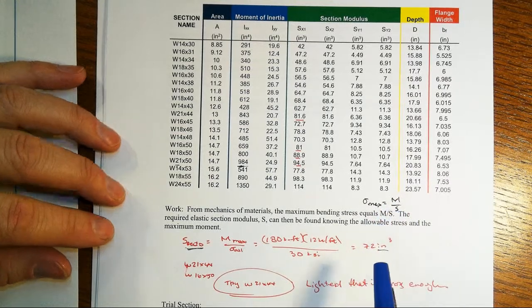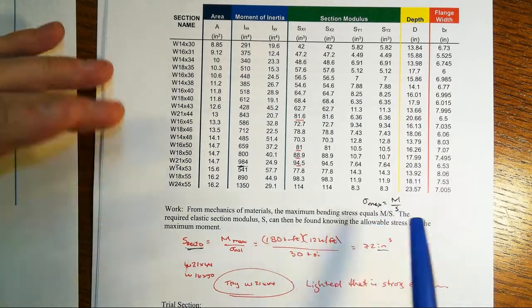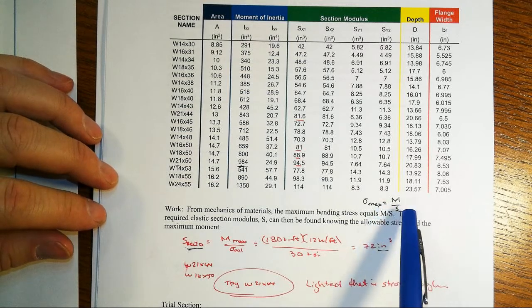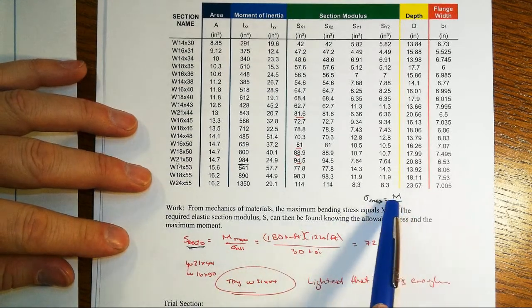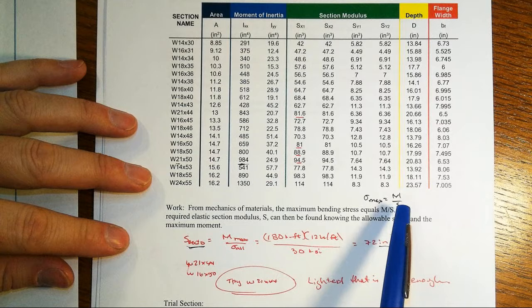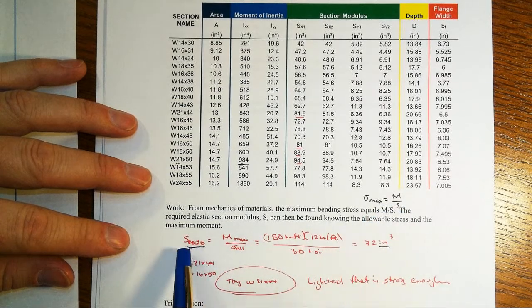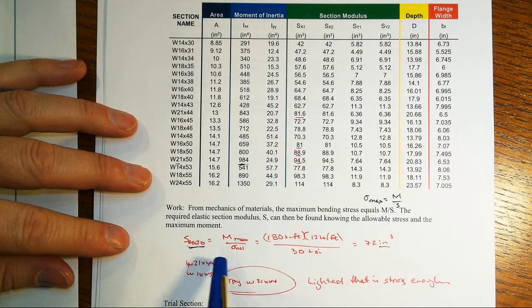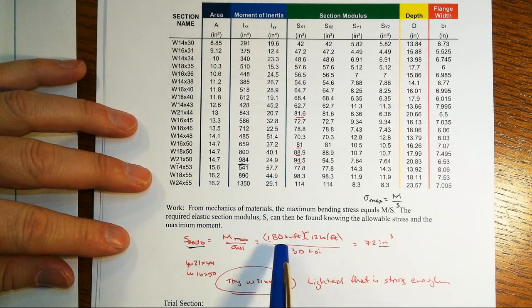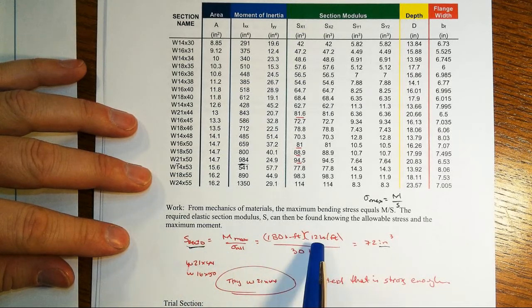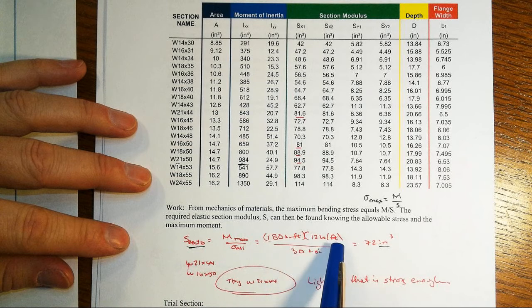We work that the basic stress equation is sigma max in a cross-section is equal to M divided by the elastic section modulus. Just a shortened version of sigma equals MC over I at the outer fibers. We work it because we know the material and we know the allowable bending stress. So the S required, the geometry required, is M max divided by sigma allowable.